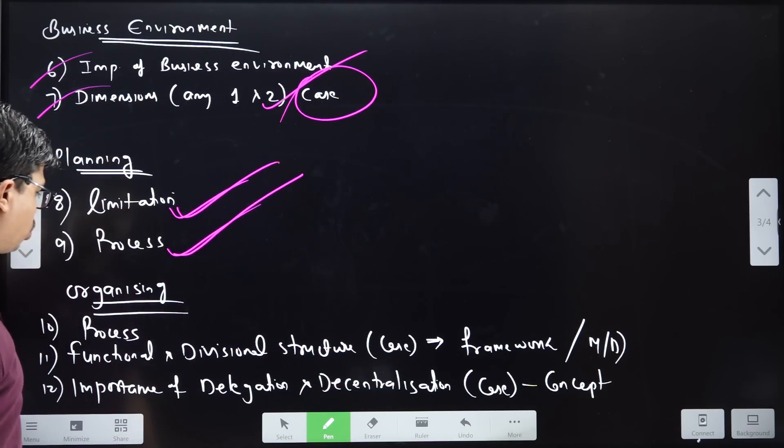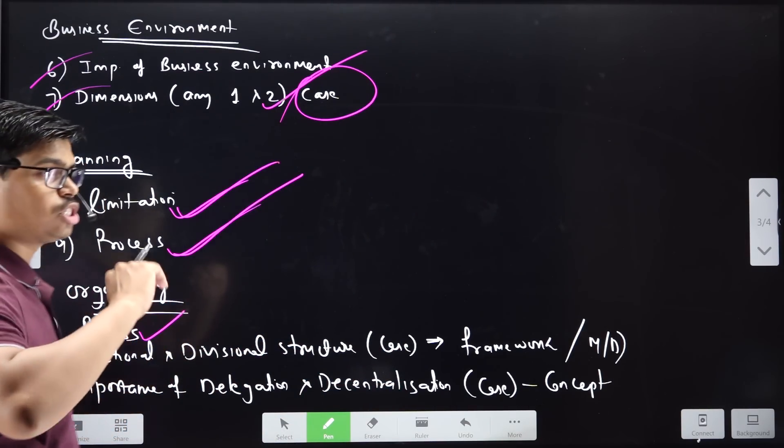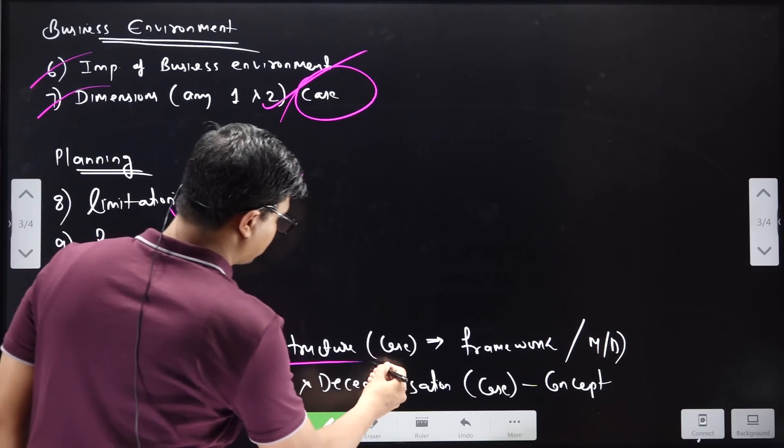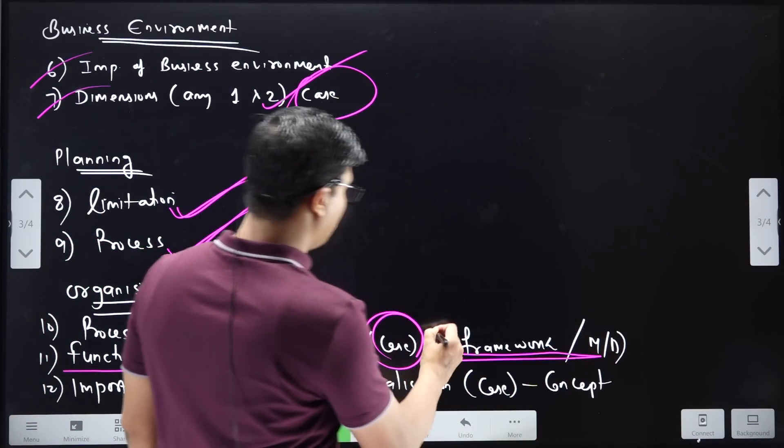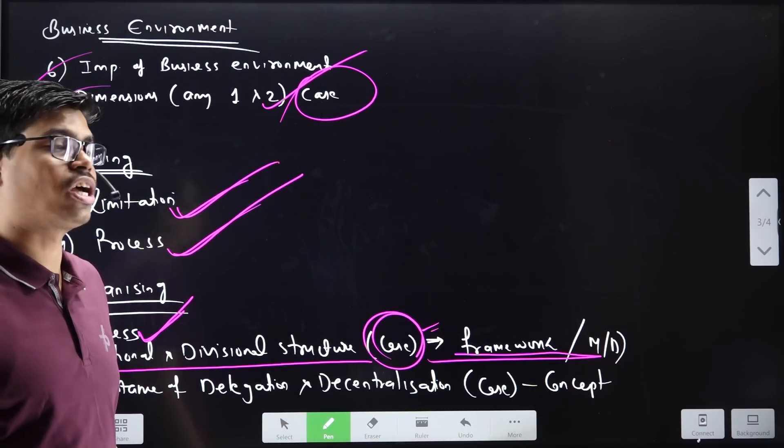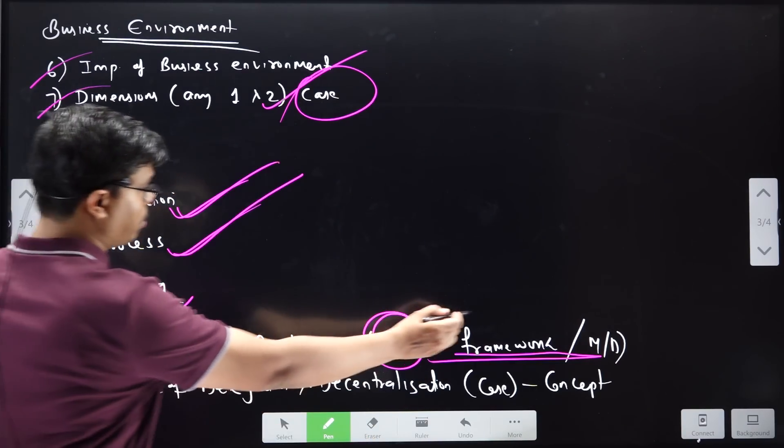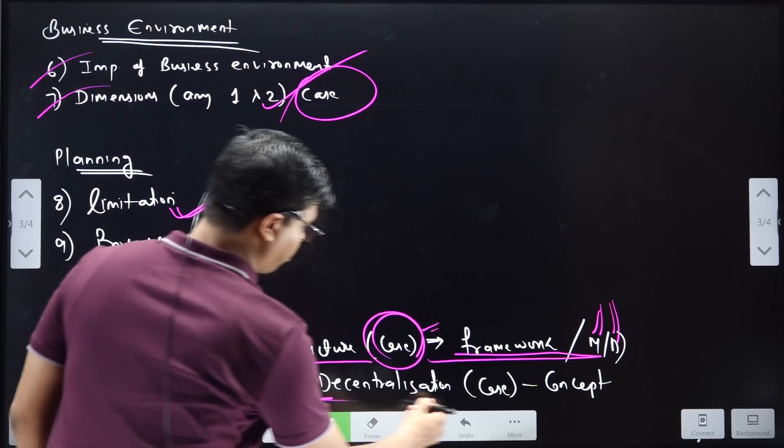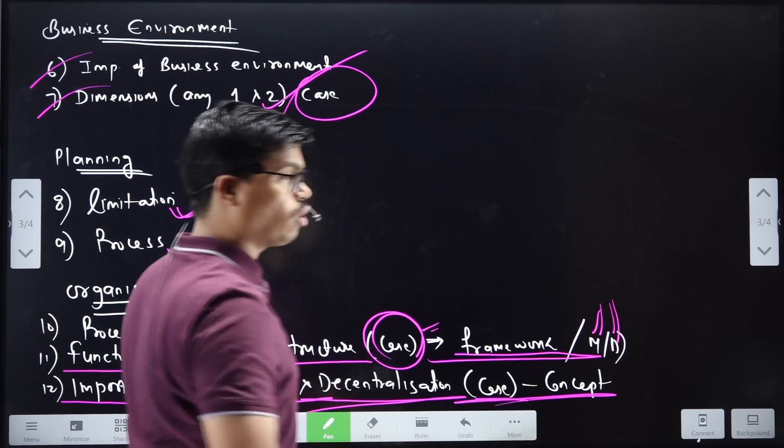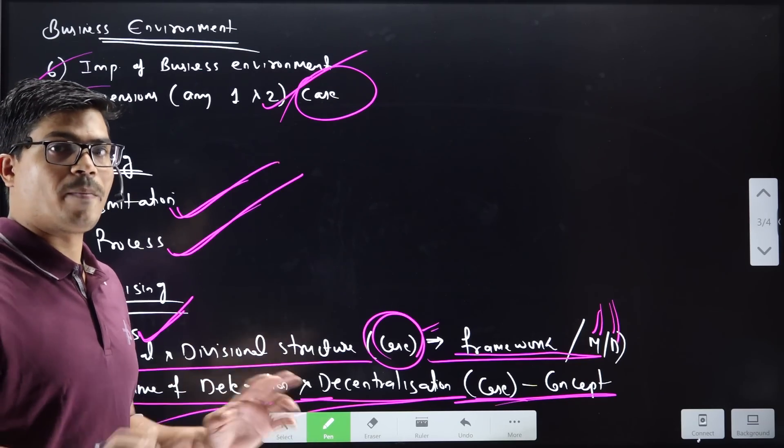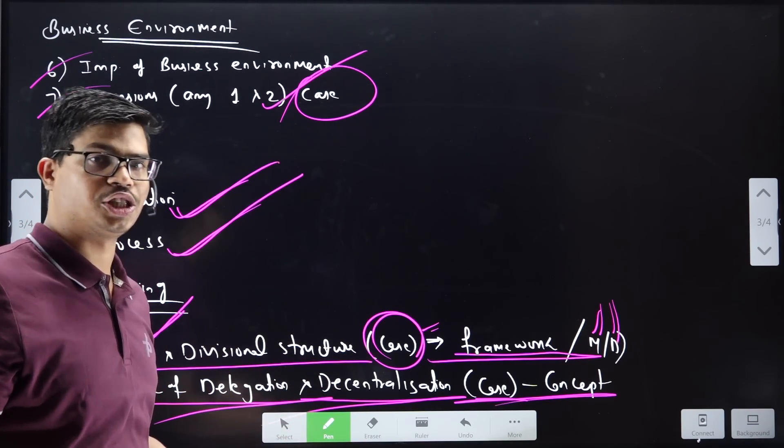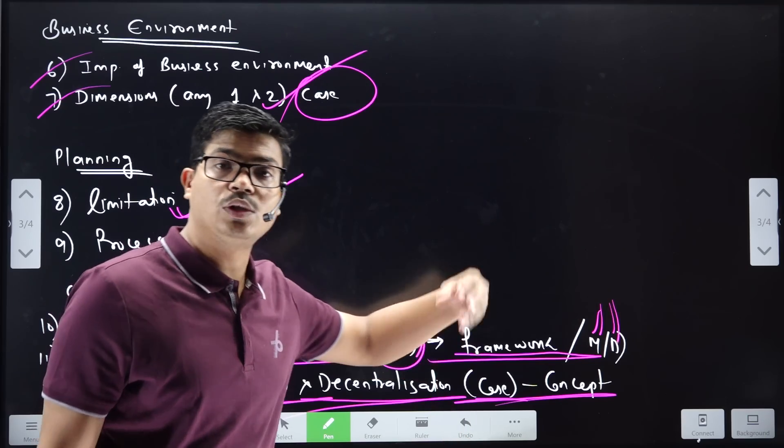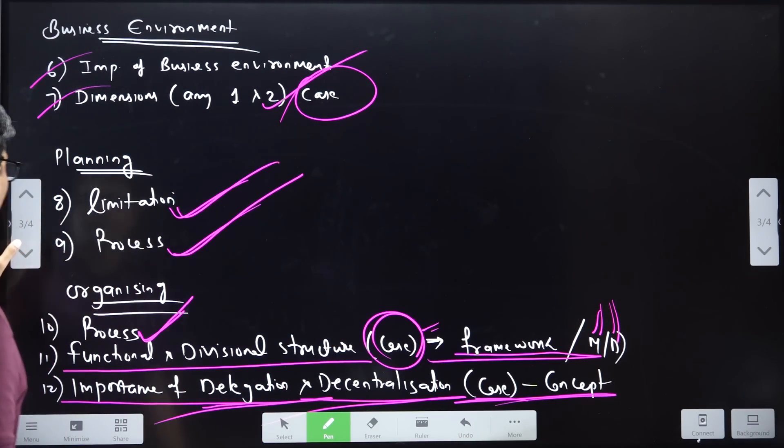In the organizing, there is a process. You have to remember at least two processes. Functional division structure is very important. What is the framework to ask, which structure will be asked, which organization structure will be asked - read the case study very well. Merit-Demerit, Importance of Delegation or Importance of Decentralization. In this case, there is a question - which concept is Delegation or Decentralization? Selective Dispersion of Authority is Decentralization. Authority shared between two is Delegation, and then you have to write importance of it. This is also very important.